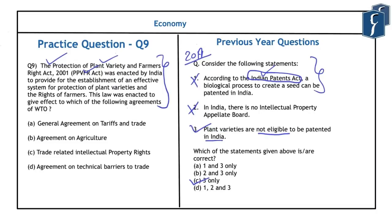The practice question asks: the PPVFR Act 2001 was enacted by India to give effect to which WTO agreement? This law was created to give effect to the Trade-Related Intellectual Property Rights agreement — the TRIPS agreement of WTO. Hence the correct answer is C. This is an important issue that can be expected in upcoming preliminary examinations.